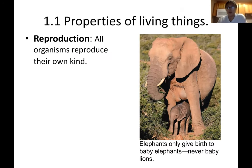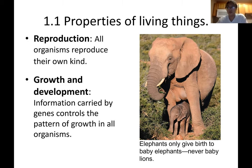Properties of living things: first, reproduction. All organisms reproduce their own kind - an elephant reproduces and produces another elephant, not a cheetah or a zebra. Dogs produce other dogs. Next is growth and development. In our genes and our genetic material, all the information is carried and passed on to the next generation. It controls growth in organisms from the very beginning when you're a single-cell zygote to when you've become a full-size elephant.